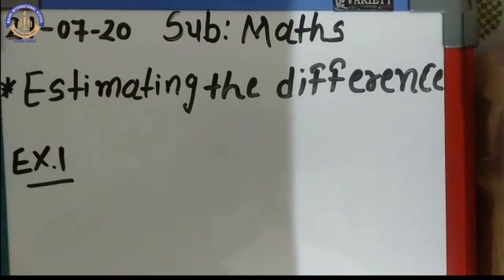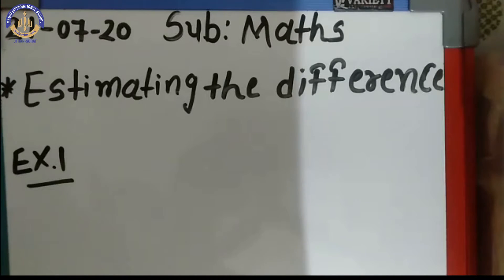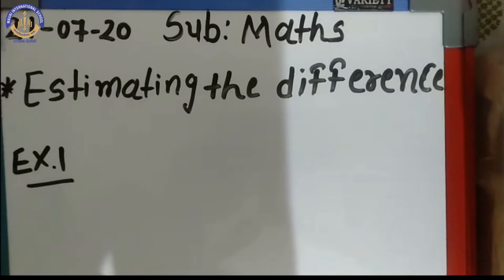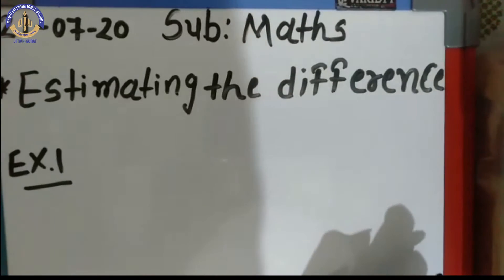First of all, why do we have to find the estimated difference? Because we don't know the exact answer. So first, we get the estimated difference, then we move to the exact difference. We will learn with the help of an example.